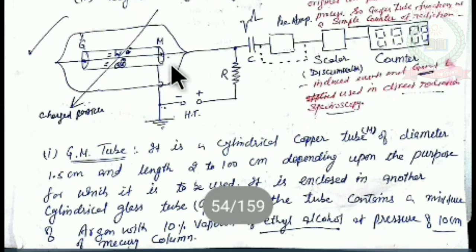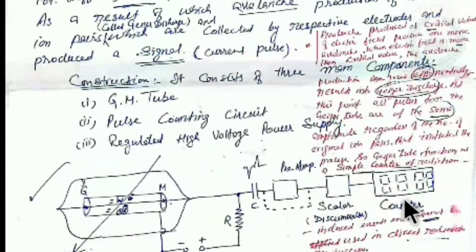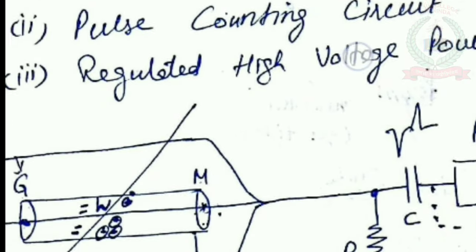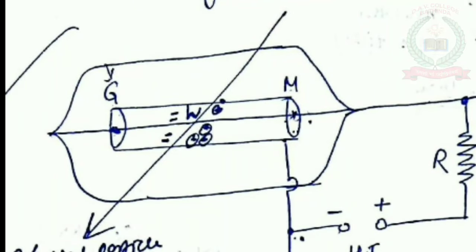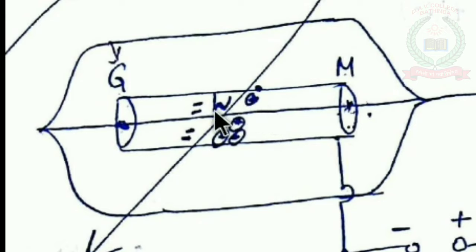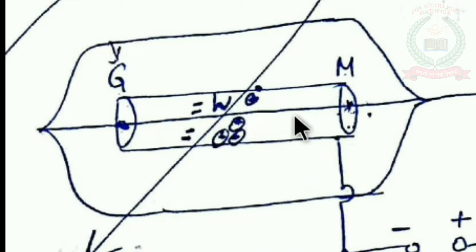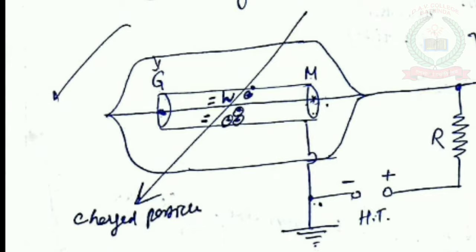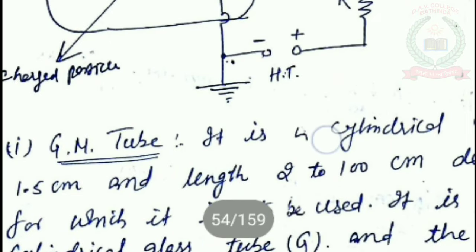When a charged particle passes through this counter, it creates ion pairs along its path — electron and positive ion pairs. The central wire is made of tungsten (W), and both the anode wire and cathode cylinder are connected to their respective electrodes, making the GM tube a sensor for detecting charged particles.